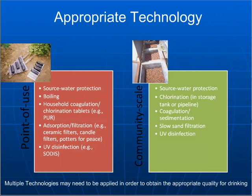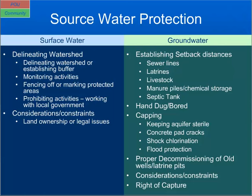Now we're going to dig in and look at these technologies one by one, keeping our distinction of point-of-use versus community-scale technologies. As I go through the next slides, I'll flag in the upper left-hand corner whether it's a point-of-use or community-scale technology. Keep in mind that you often see multiple technologies applied together to achieve appropriate water quality — for example, slow sand filtration used in conjunction with UV or chlorination.